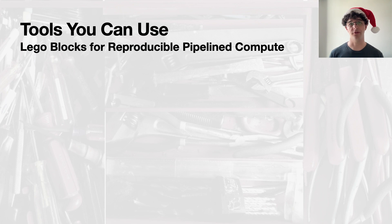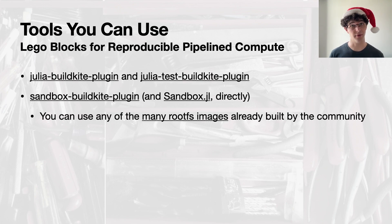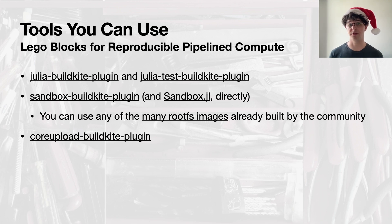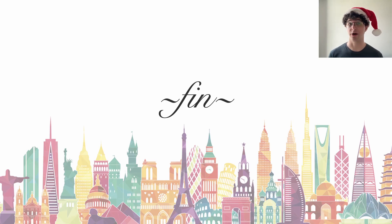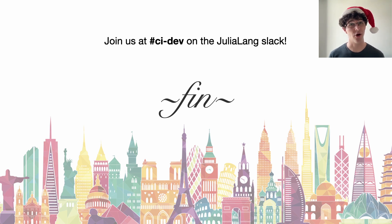In closing, some tools you yourselves can use in your own BuildKite pipelines are the Julia and Julia test BuildKite plugins, the sandbox plugin, and the core upload plugin for uploading core traces after something has segfaulted. You can also use Sandbox.jl directly if you just want to use it from Julia. And finally, BugHunt, which will require some modifications for your own repositories. I'd like to thank all the volunteers who have been working with us over the last year on getting this effort pushed through. If you are at all interested in this, please join us on the CI Dev channel on the Julia Lang Slack. We'd love to have you. Thank you.